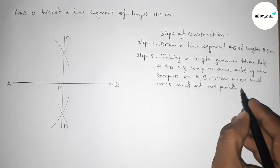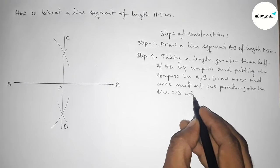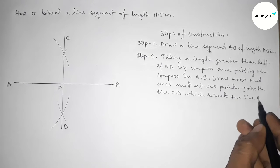The arcs meet at two points. Now joining the line CD which bisects the line AB at point P.